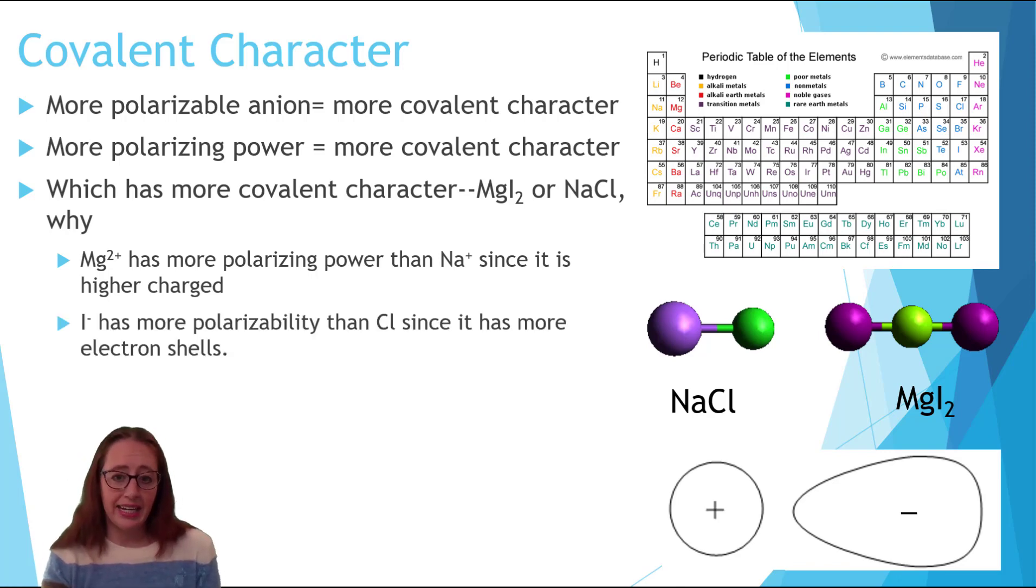We can look at the anion and see that iodide is further down the periodic table, but has the same charge as chloride. This means we'll base which one has more polarizability just on its size. Iodide is larger, therefore it has more polarizability. This means that the anion too points toward magnesium iodide as having more covalent character. Since magnesium has more polarizing power and iodide has more polarizability, magnesium iodide has more covalent character.